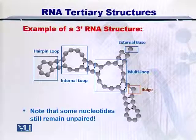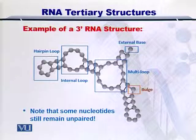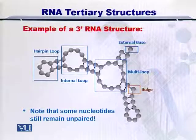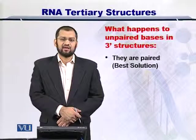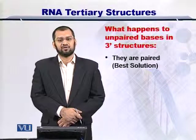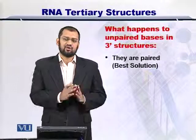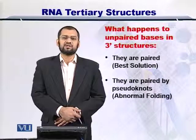What if some of the nucleotides still remain unpaired? We have been trying to couple the nucleotides with each other as much as possible in both the secondary and tertiary structures. But there are some nucleotides that are still unpaired and open to interaction with other secondary or tertiary RNA structures. The best solution is that they become paired with other unpaired nucleotides. However, if that is not the case, then the RNA molecule can actually fold onto itself within the tertiary structure, which may result in the formation of pseudoknots.